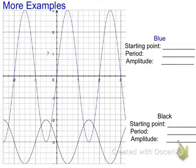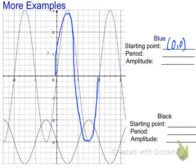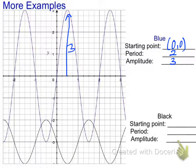Here's the next set of examples. Looking at the blue curve — tracing one complete sine cycle — the starting point is at (0, 0), the period looks like it completes after 2 units, and the amplitude is 3, because the graph goes up 3 and down 3 from the center line.